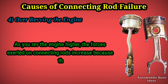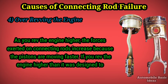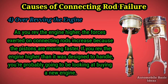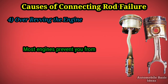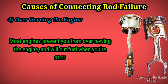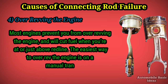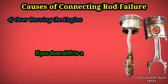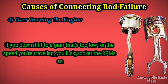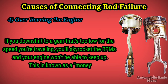Four: over-revving the engine. As you rev the engine higher, the forces exerted on connecting rods increase because the pistons are moving faster. If you rev the engine higher than it was designed to handle, you're probably going to need a new engine. Most engines prevent over-revving by cutting fuel just above redline. The easiest way to over-rev is on a manual transmission — if you downshift to a gear too low for your speed, you skyrocket the RPMs. This is known as a money shift, because this type of miss-shift ends up being very expensive.